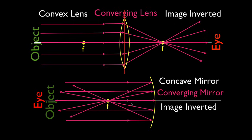If we bring the object inside the focal point, then something different happens — it will appear right side up, which we'll talk about in future videos. But for parallel light rays coming in from greater than the focal point, the light rays converge at the focal point and the image is inverted. So the convex lens and the concave mirror have opposite shapes, but they're both called converging devices, and the image is going to be inverted or upside down.